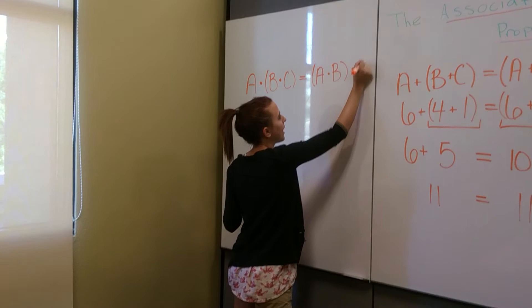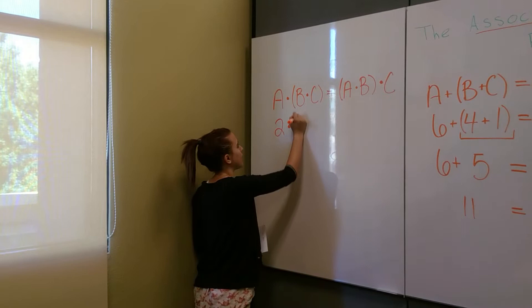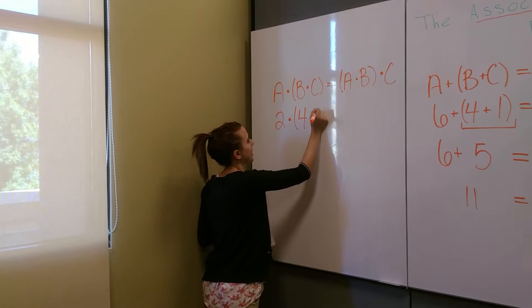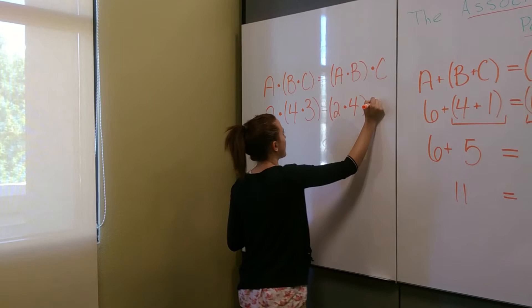And so once again, if we want to do an example and put in some numbers for this, we can put our A as 2 and times parentheses. We can put our B as 4 and our C as a 3. So now if we write this on this side as well, we start with our parentheses. Our A is 2 times our B, which is 4, and then times C, which is 3.